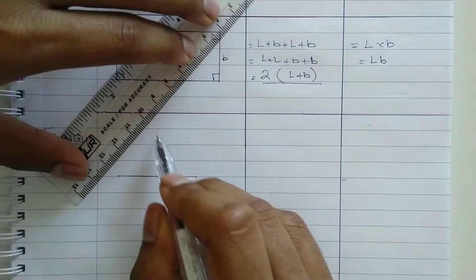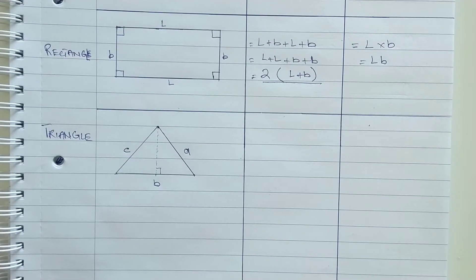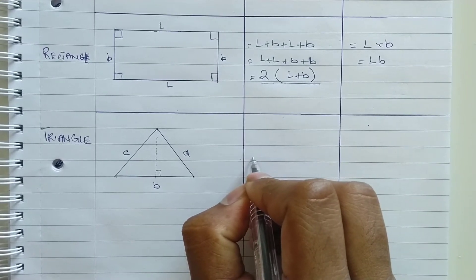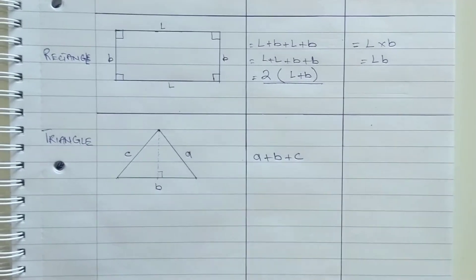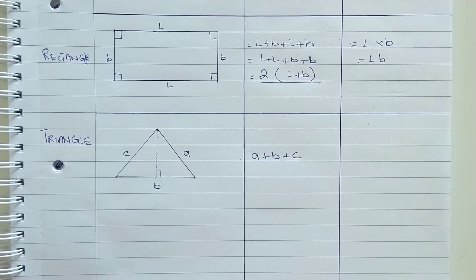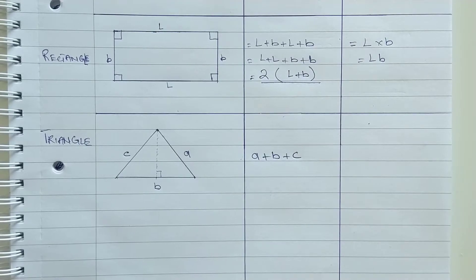Next we have triangle. So a triangle has three sides A, B and C. To calculate the perimeter of a triangle, we have to add up all its sides. So it becomes A plus B plus C.